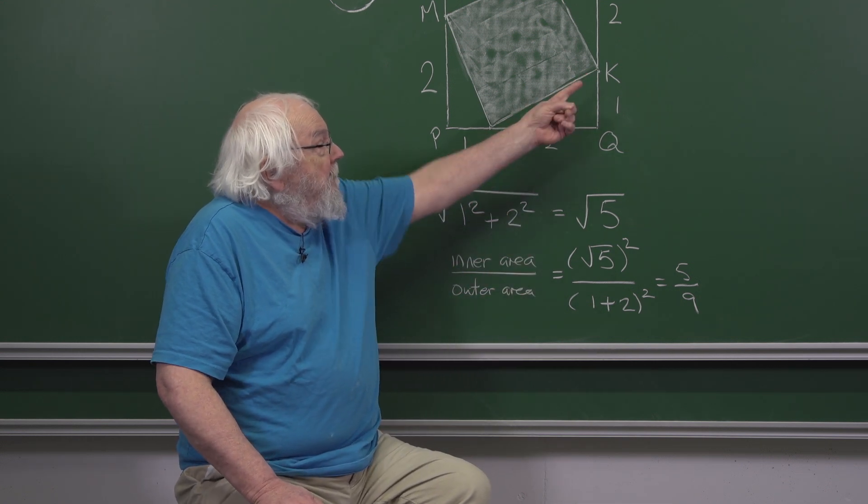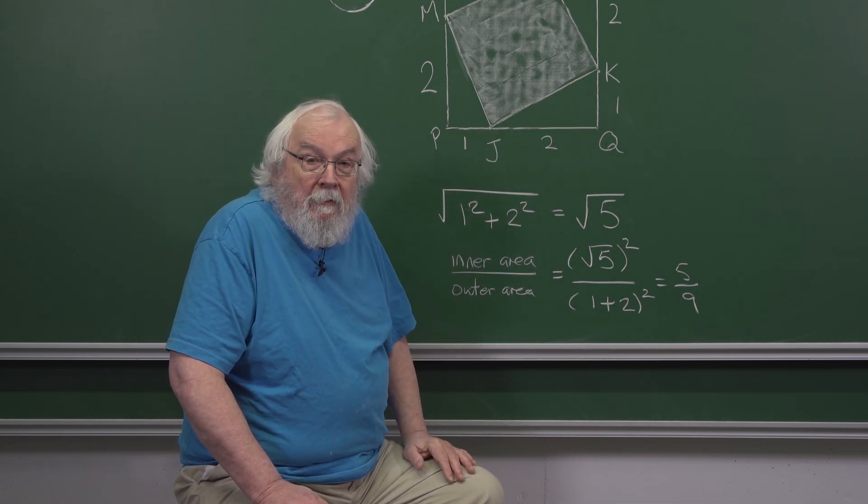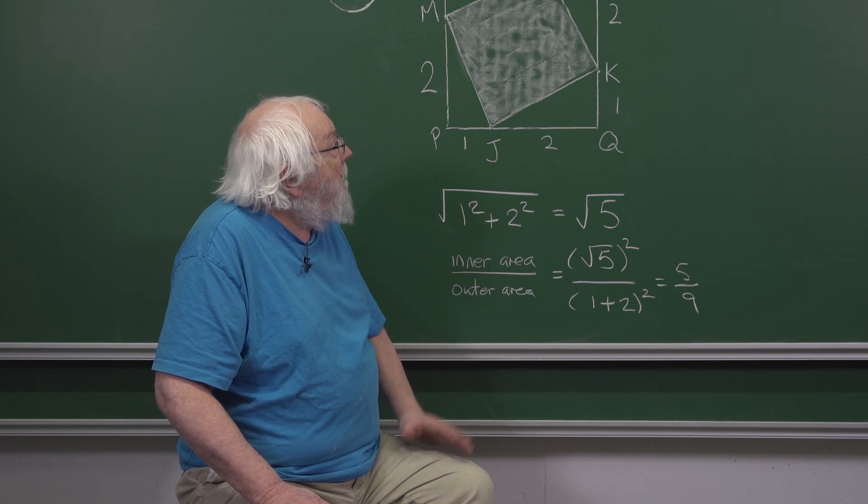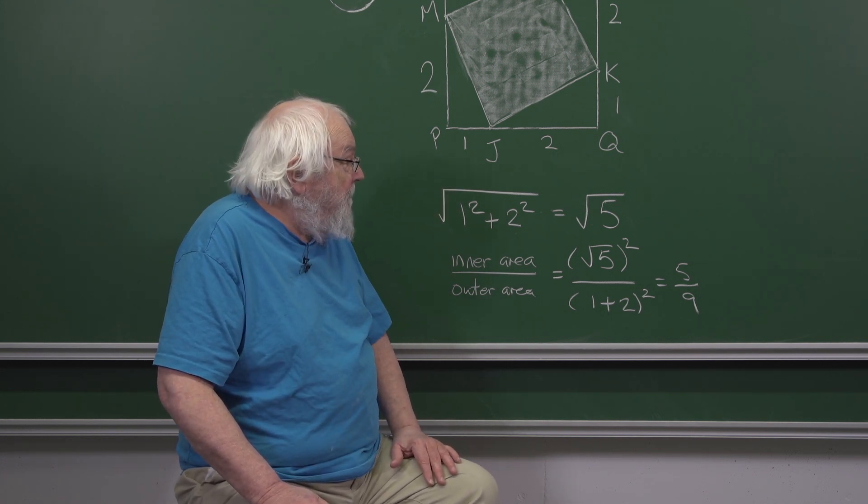So JK, for example, has length root 5 and that tells you that the area of the shaded square is going to be root 5 times root 5, which is 5.